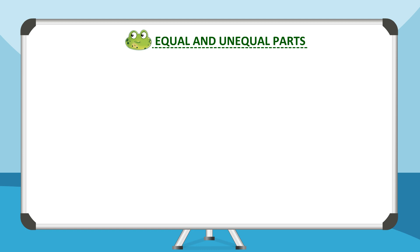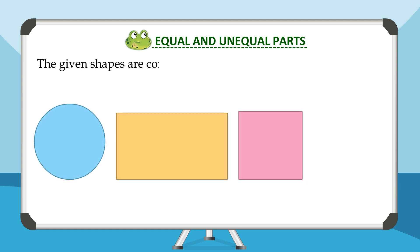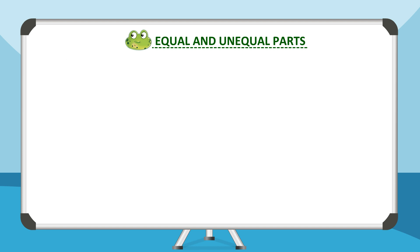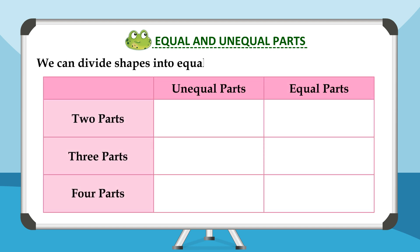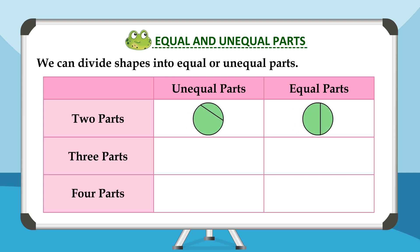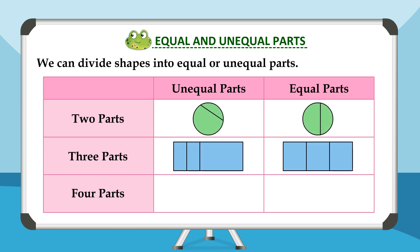Equal and unequal parts. The given shapes are complete. We can divide shapes into equal or unequal parts — unequal parts or equal parts, into two parts, three parts, or four parts.